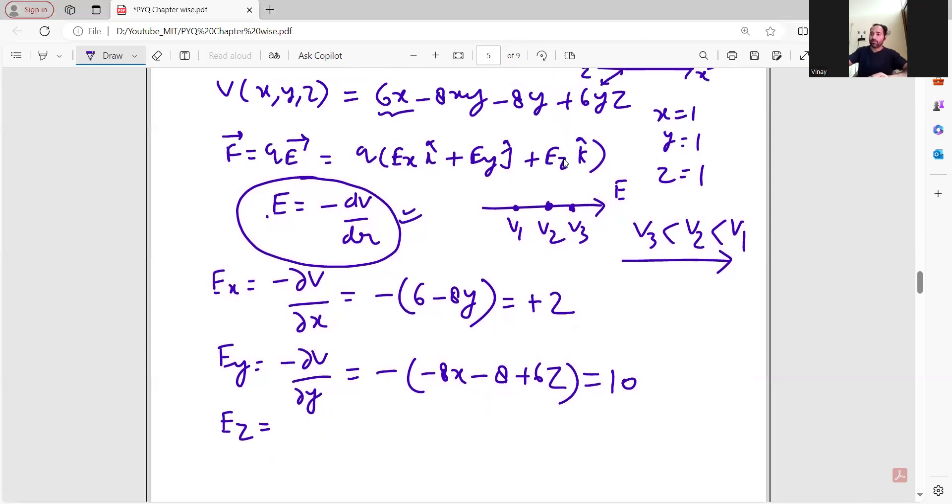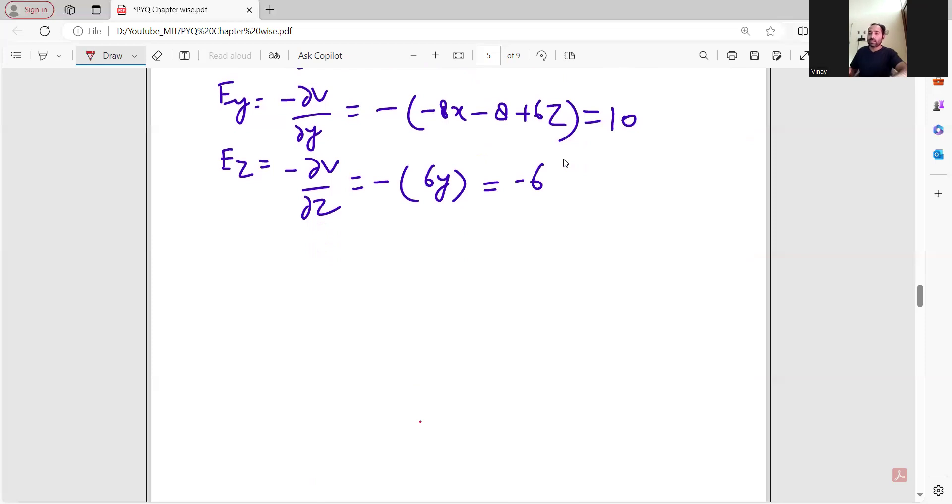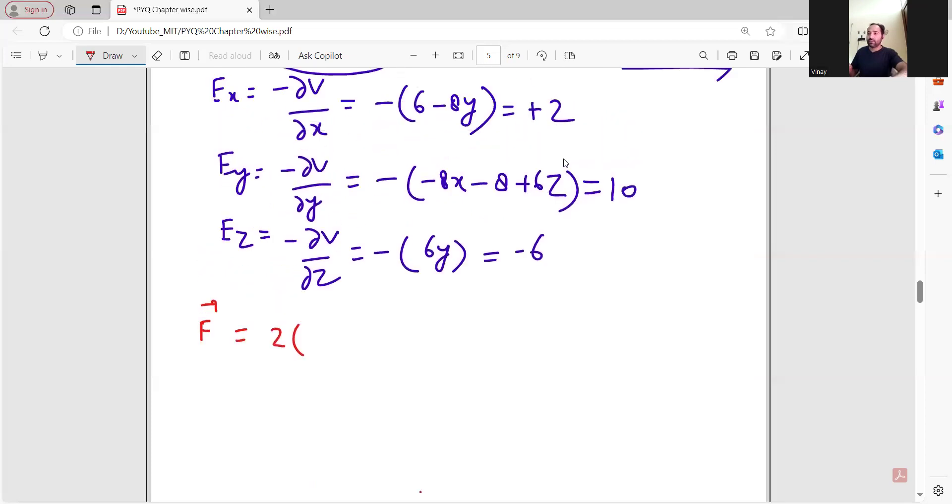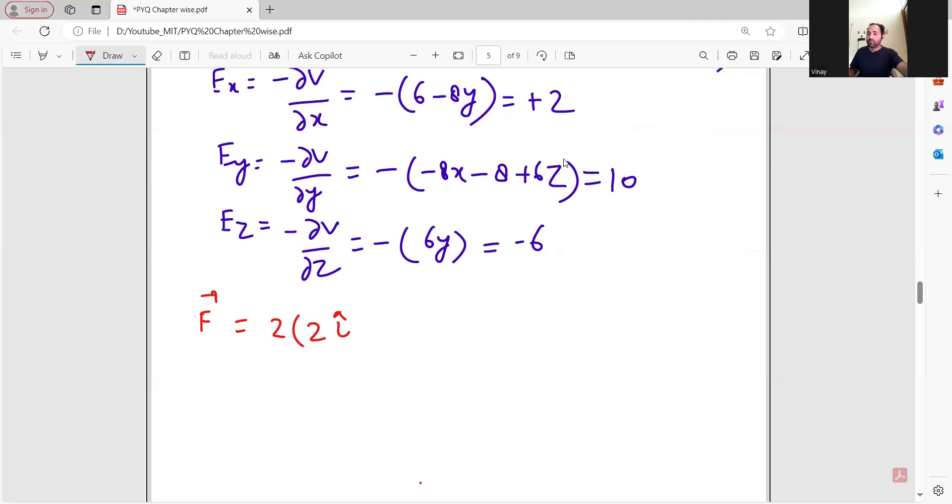You will have to find Ez, which equals minus del V del z. The first two terms are 0, and the last term is 6y. So Ez equals minus 6y. At the point, Ez equals minus 6.